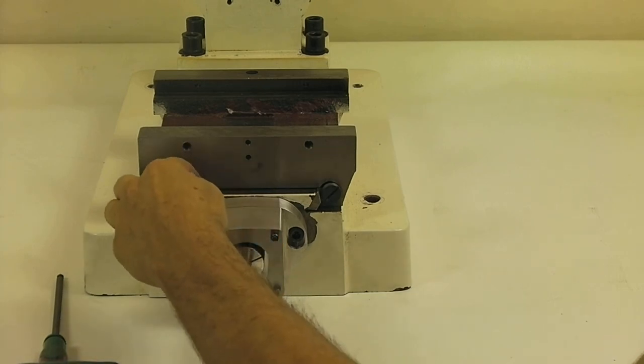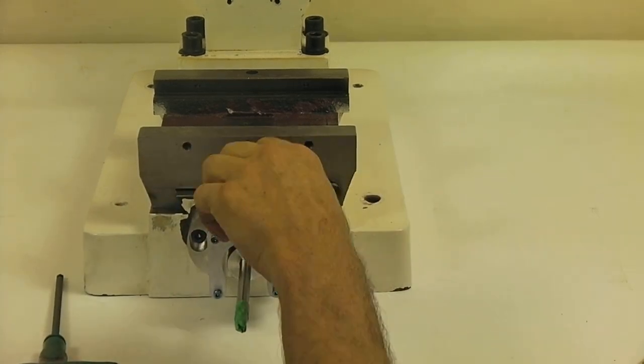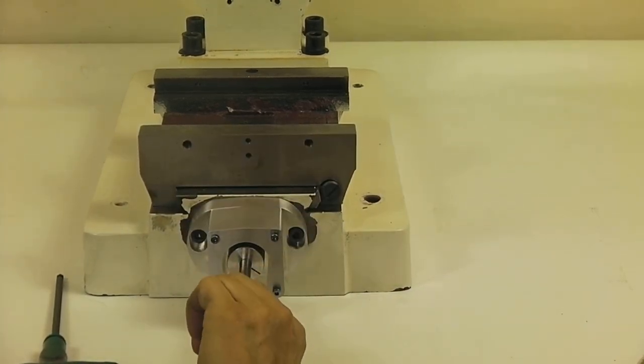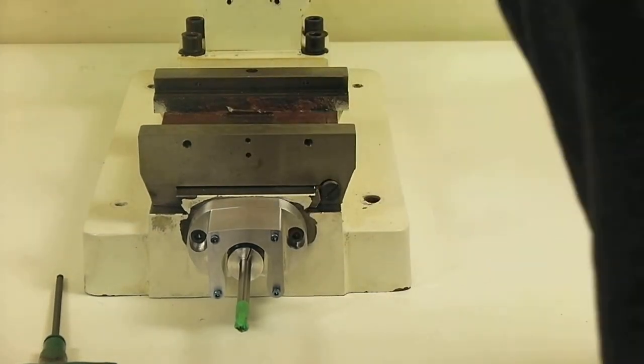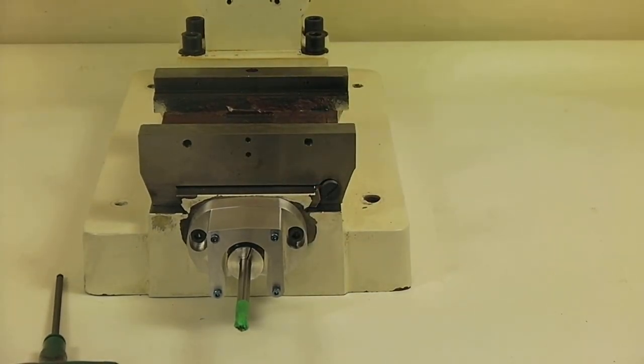It may be that you have to put a shim underneath here, depends on how flat the front of the machine is. Most of the time, you don't have troubles. But like I said, with tight ball nuts, it can bind. That's it. The Y-mount is installed.